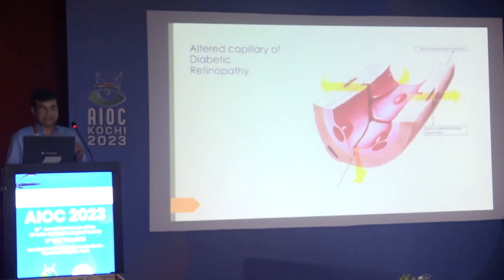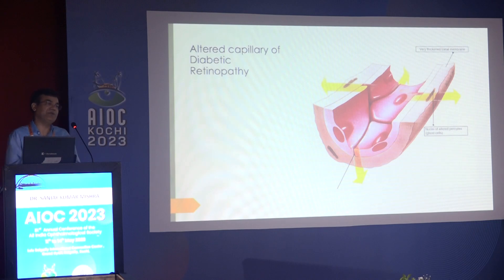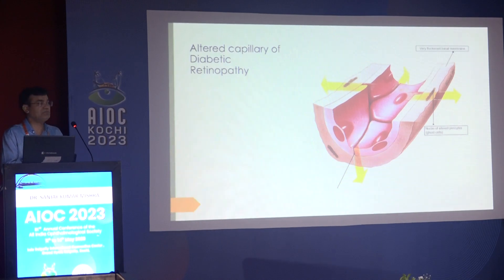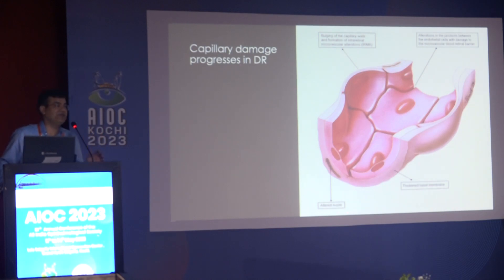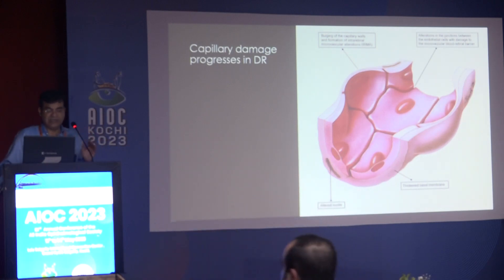What happens when there is an alteration in the capillary in diabetic retinopathy? The endothelial cells' tight junctions start breaking up and loosening. Thickening of the basal membrane starts happening and the nucleus of the pericytes starts getting altered. As the damage further progresses, the capillary starts getting thinned out, and when it starts getting thinned out, it starts bulging. The capillary wall starts bulging, hence the formation of the microaneurysm.